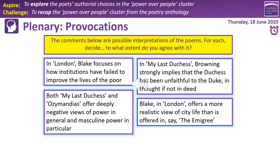'Both My Last Duchess and Ozymandias offer deeply negative views of power in general and masculine power in particular.' My Last Duchess is hard to argue with — the Duke's power is oppressive, repressive, and suppressive, all about maintaining his own standing by treading down others. We see this in his treatment of the wife, his ordering people around, and his control over the painting. His power is very masculine: assertive, commanding, possessive, and based on dominance over women.